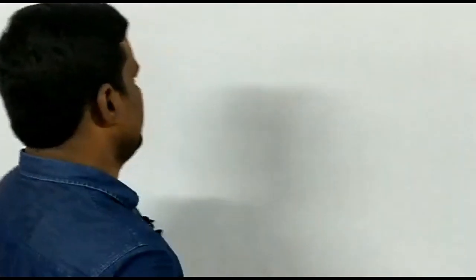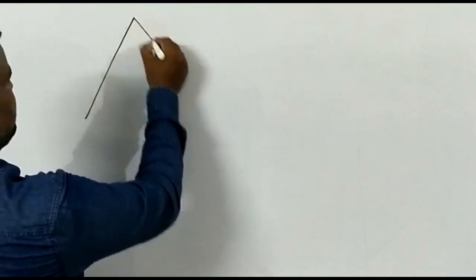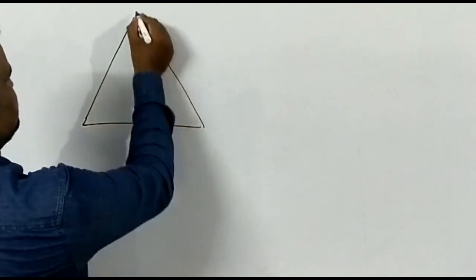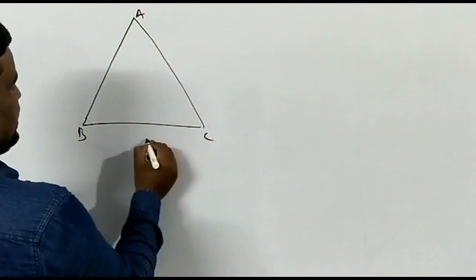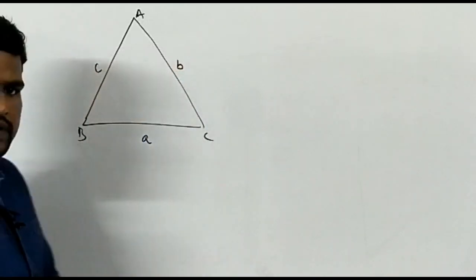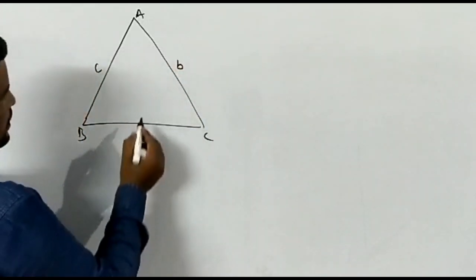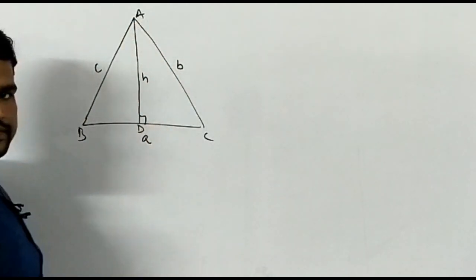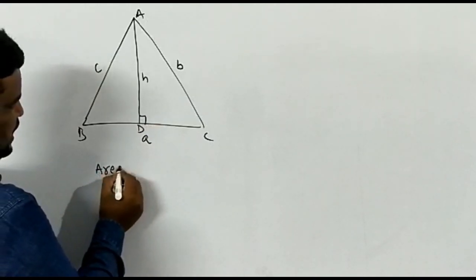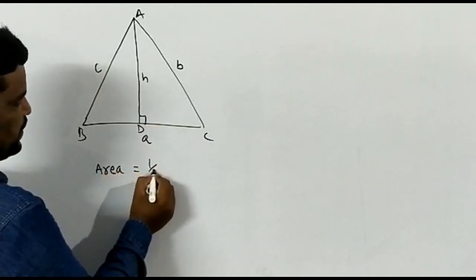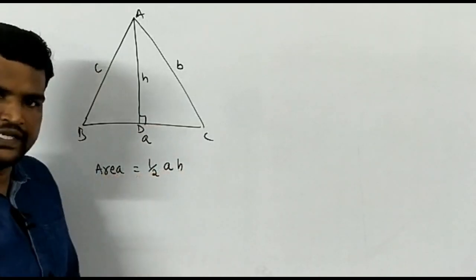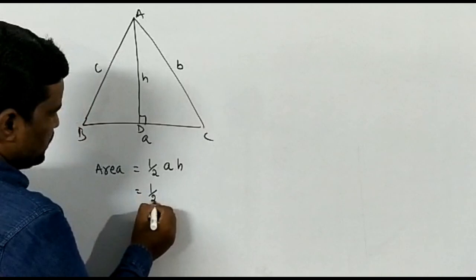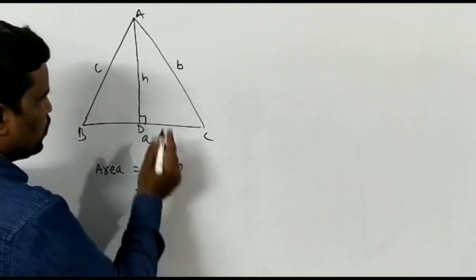Now let us derive Heron's formula using the cosine rule. Suppose triangle ABC with sides A, B, and C. Draw a perpendicular AD of length H on BC. Area of triangle ABC = (1/2) × base × corresponding height.